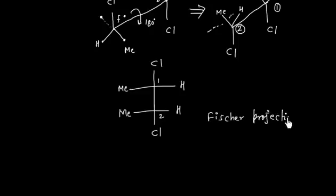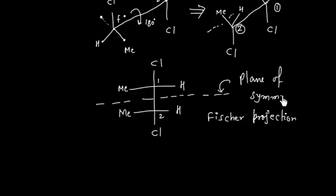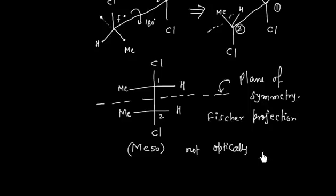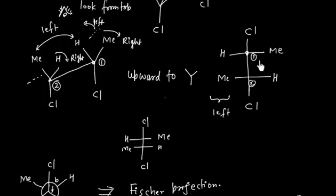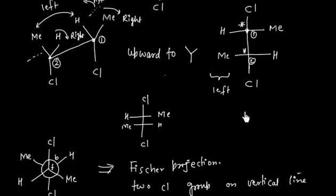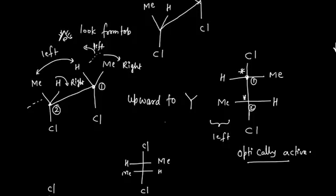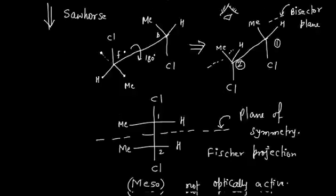Now if you see, this compound has a plane of symmetry. So this compound is not optically active — this is a meso compound. The first compound is optically active and is not meso, because there is no plane of symmetry. It has chiral carbons with no plane of symmetry, so it is optically active.